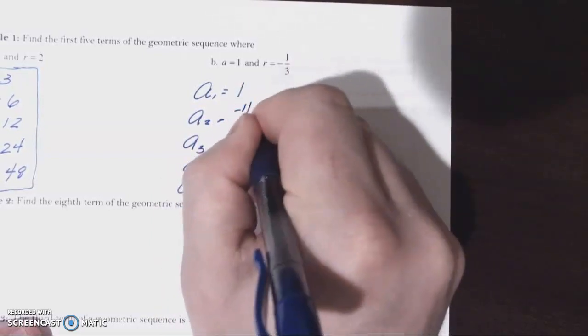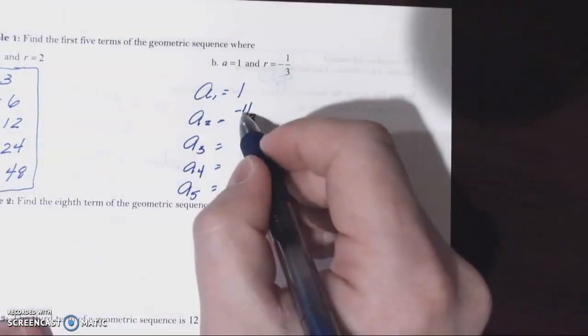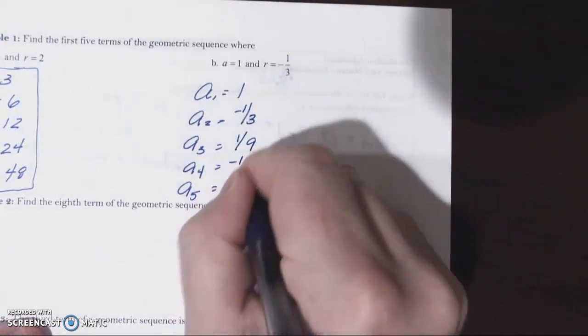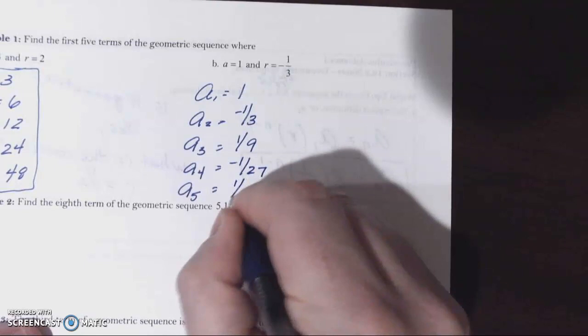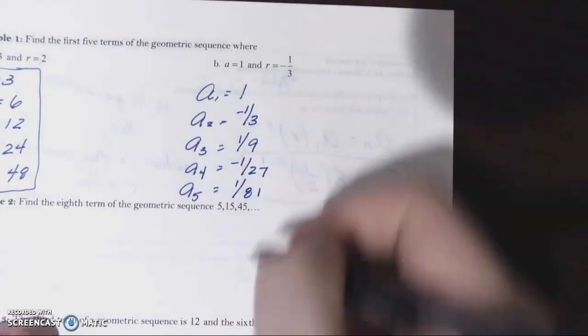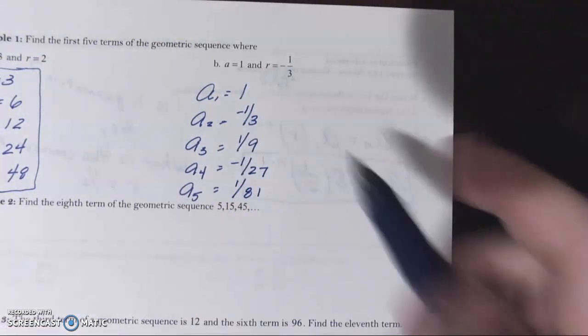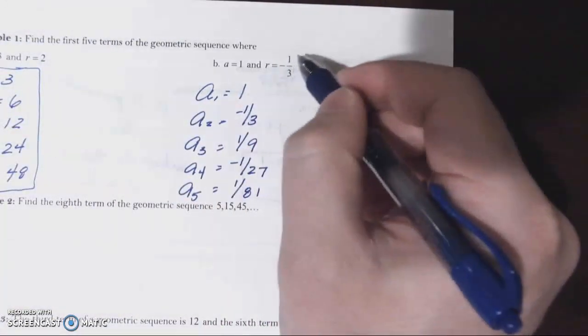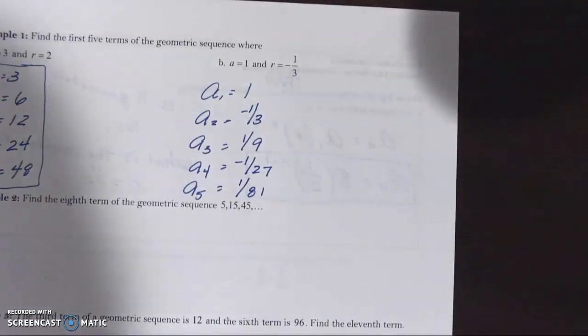Negative one-third times negative one-third is positive one-ninth. And then negative one over 27, and then positive one over 81. Basically the denominator is growing by a factor of three. The numerator is not growing at all, but you can see that these signs will alternate. We've talked about that.